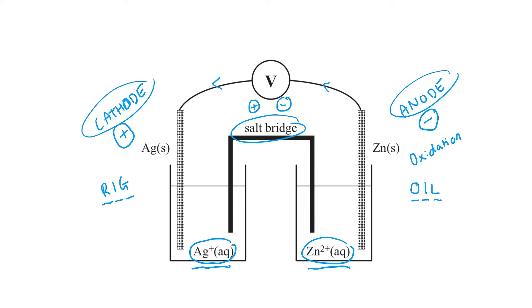Now, positive ions, although it sounds counterintuitive, flow to the positive electrode. And our negative ions flow to our negative electrode.